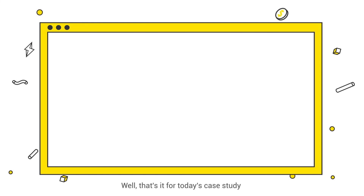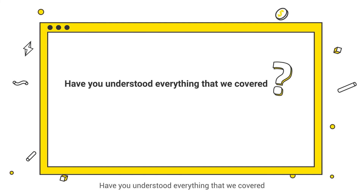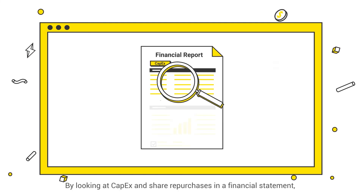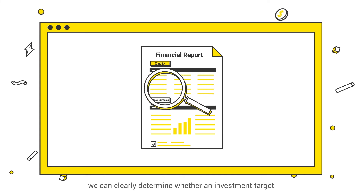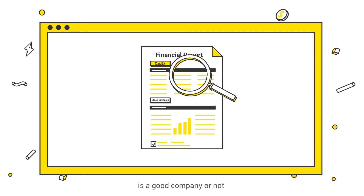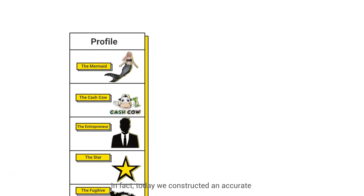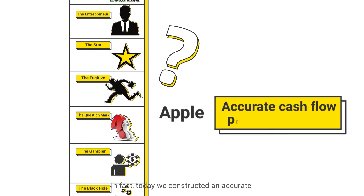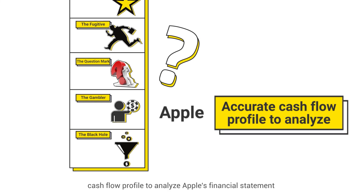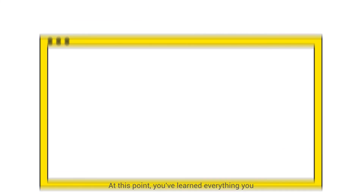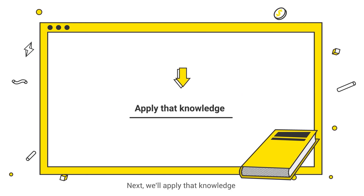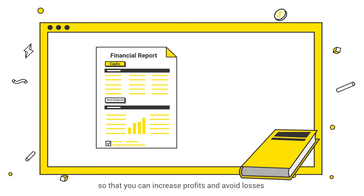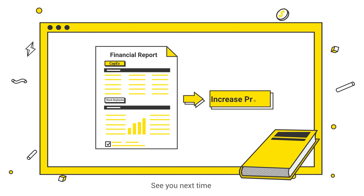Well, that's it for today's case study. Have you understood everything that we covered? By looking at CAPEX and share repurchases in the financial statement, we can clearly determine whether an investment target is a good company or not. In fact, today we constructed an accurate cash flow profile to analyze Apple's financial statement. At this point, you've learned everything you need to know about the three financial statements. Next, we'll apply that knowledge so that you can increase profits and avoid losses. See you next time!